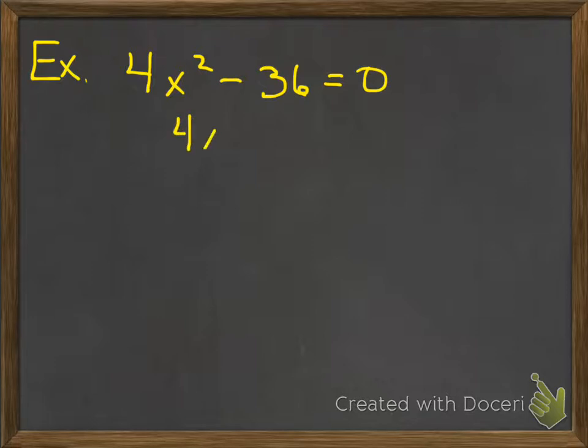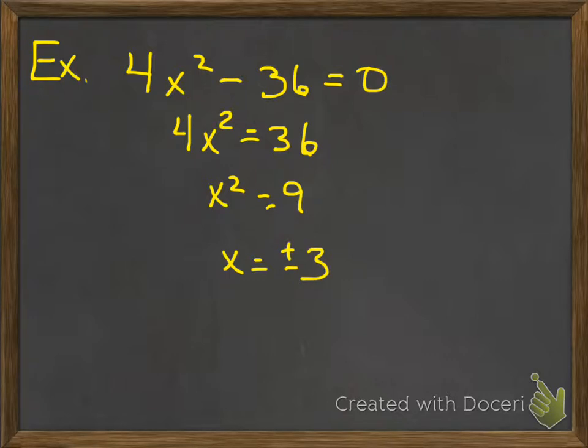For 4x squared minus 36 equals 0, move the 36 over: 4x squared equals 36. Then divide by 4: x squared equals 9. Take the square root: x equals plus or minus 3. So you move, divide, then take the square root. Square roots are the last operation.